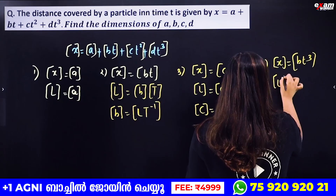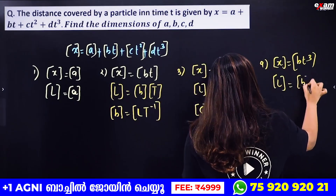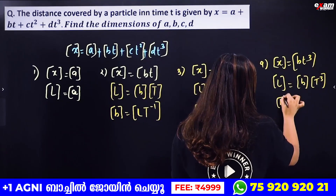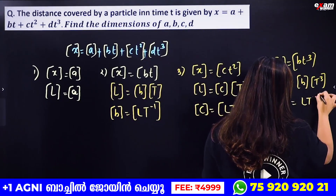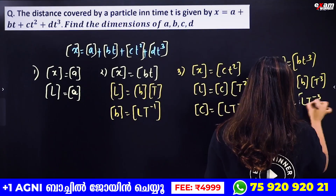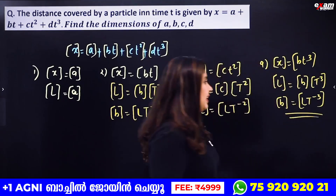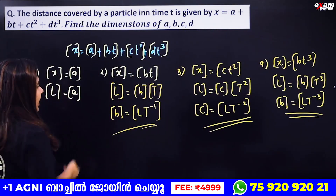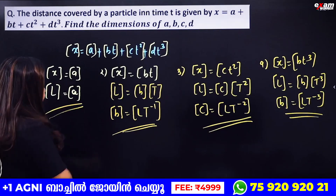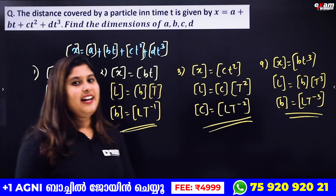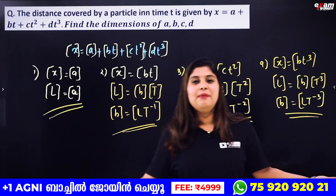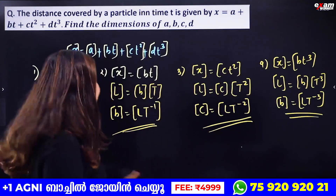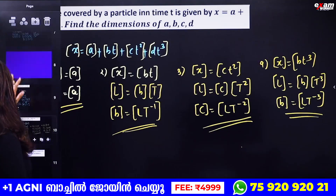For the term bt³, x has dimension L, so b has dimension L·T⁻³. For ct², c has dimension L·T⁻². And d has dimension L·T⁻³ accordingly. Very easy question — if each term's dimension equals the same dimension, we are done.